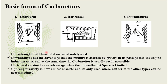Down-draught and horizontal are the most widely used forms. Down-draught has an advantage that the mixture is assisted by gravity in its passage into the engine induction track, and the carburetor is usually easily accessible. The horizontal version has an advantage when the under-bonnet space is limited. The up-draught variety is now almost obsolete and is only used where neither of the other two types can be accommodated.